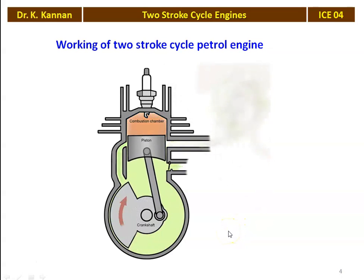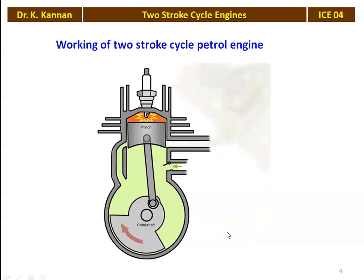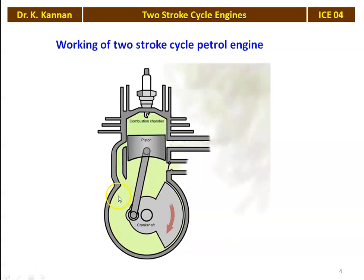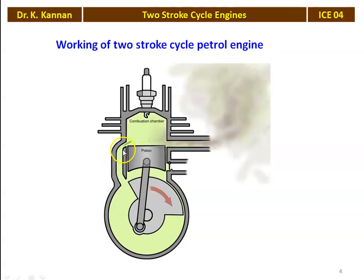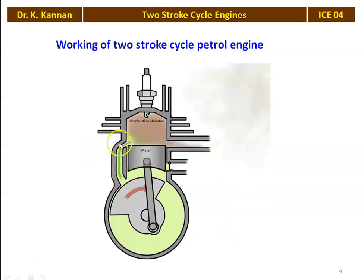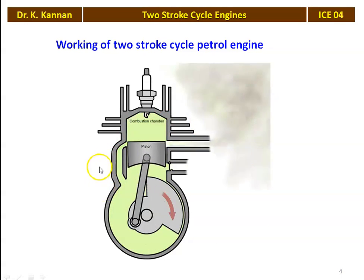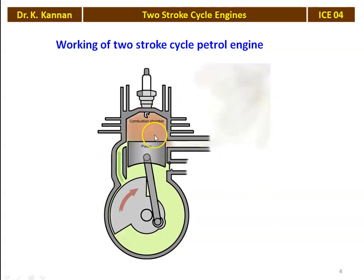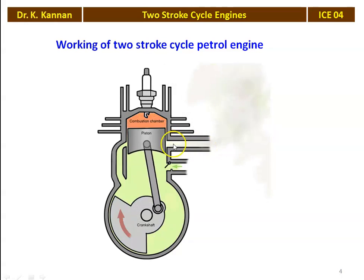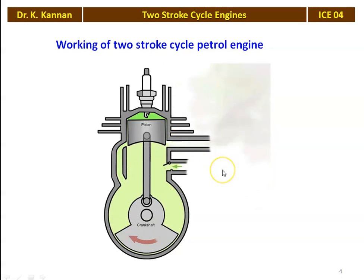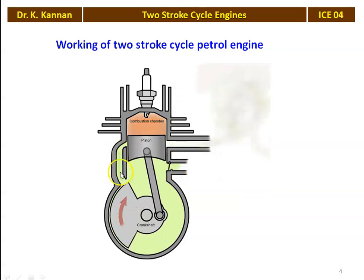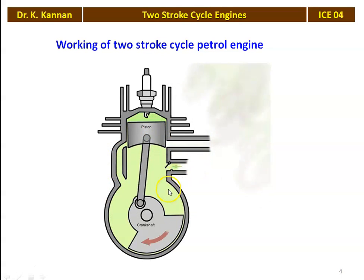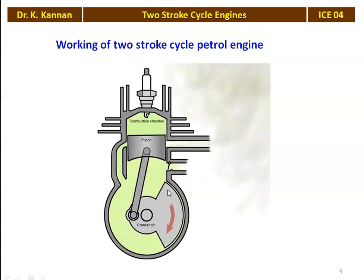This portion is the crankcase. During the piston's downward movement, the air-fuel mixture inside the crankcase is compressed, and the compressed air-fuel mixture enters into the engine cylinder through a small opening called the transfer port, where compression takes place followed by expansion and exhaust. This opening is called the exhaust port. So we have the intake port, transfer port, and exhaust port.